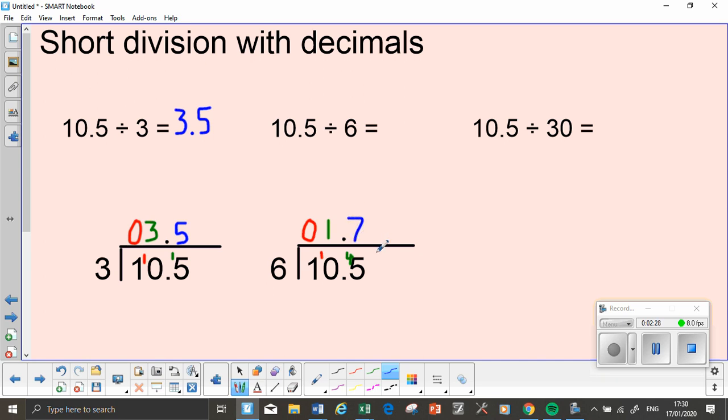So if I put my 7 on the top, it's 42. So then 42 to 45, the difference is 3. Now there's nothing in this 100's column, so I need to make a big 0 here. So now I need to say to myself, how many 6's go into 30? And the answer is 5.